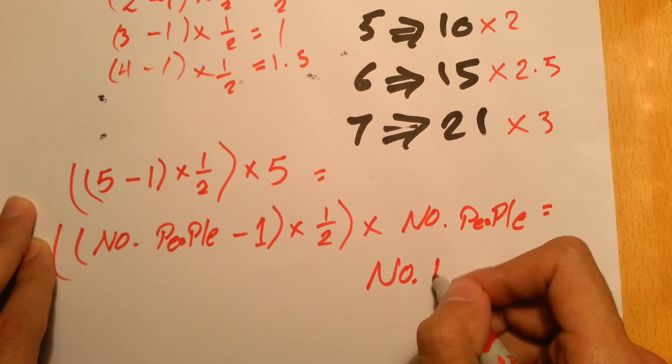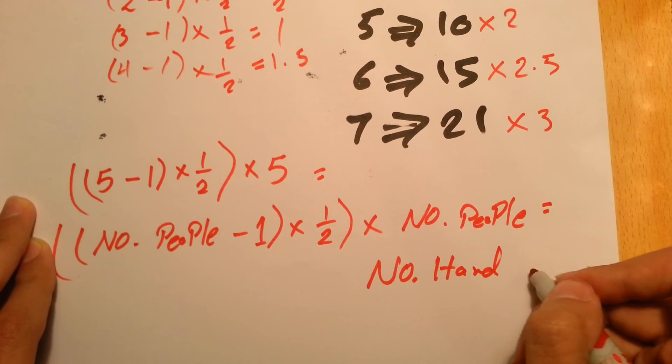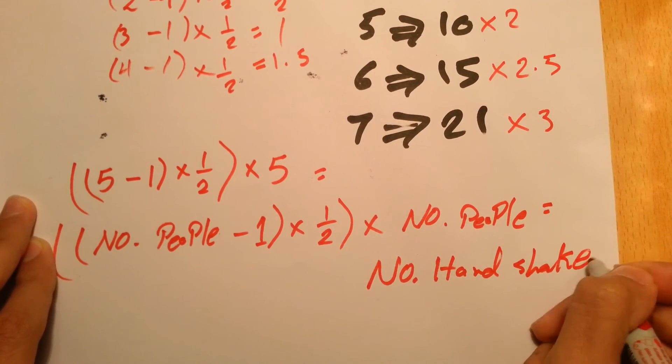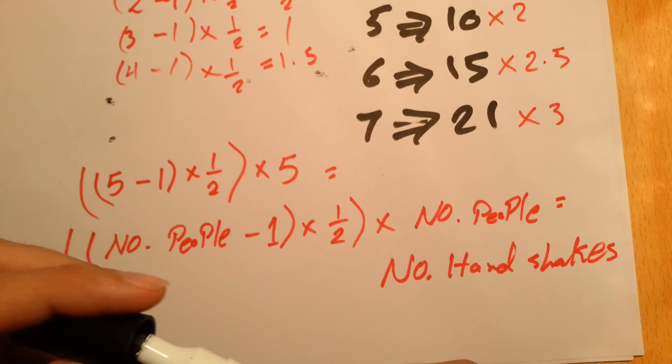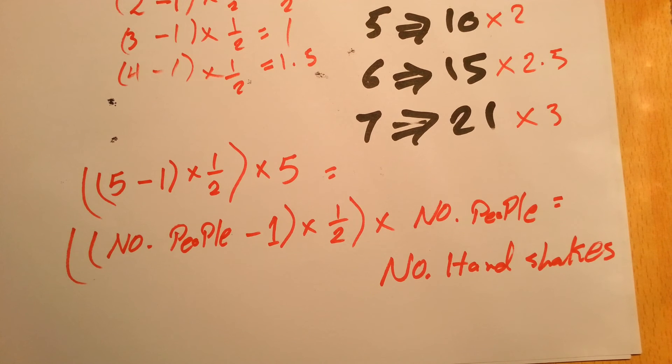So what are the lessons that we can get from this? Try to be systematic. Don't ever, even if you were given a question without numbers, try to put some numbers for that question so that you'll be able to think and brainstorm your mind to find the solution.